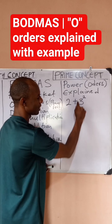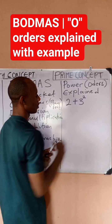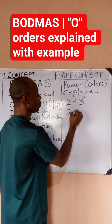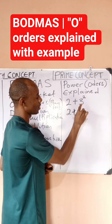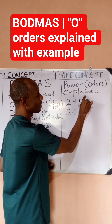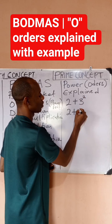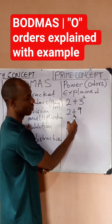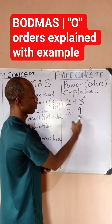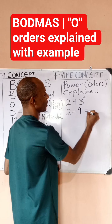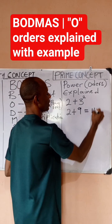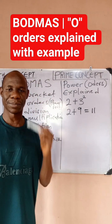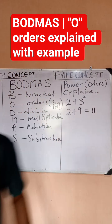So I have an addition here, but first I want to look at the orders. I'll solve this by saying 2 plus — I'll still retain my addition — 3 raised to power 2 is 9. Then I can now carry out the other operation: 2 plus 9 gives me 11, and this is the answer. Thanks for watching, Prime Concept.